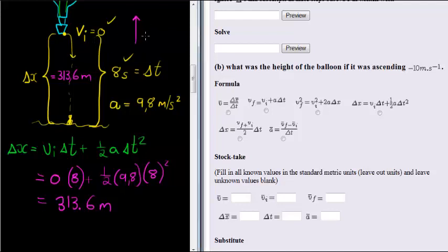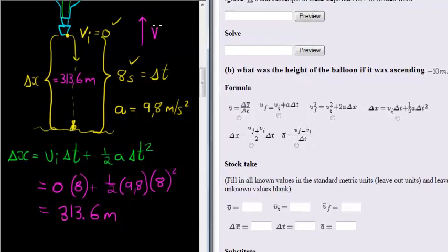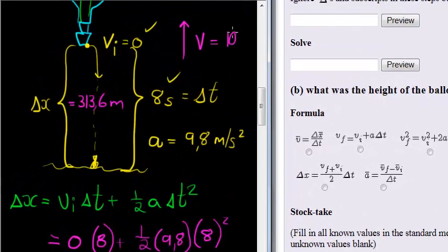Now, they just say that it was ascending at 10 meters per second, but in the upward direction. That's why it's negative.